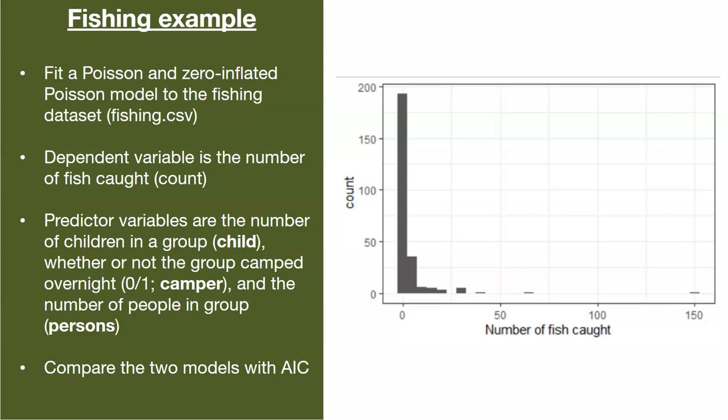Now we're going to work through this fishing dataset to explore some of these Poisson and zero-inflated Poisson models. We're going to fit these to the fishing dataset and these two different model types. The dependent variable is the number of fish caught, and the predictor variables are the number of children in the group, whether or not the group camped overnight, and the number of people in the group.